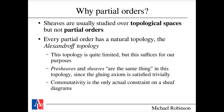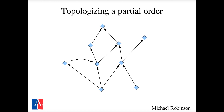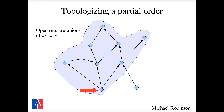What does the Alexandrov topology look like? Starting with a partial order: the elements are represented as blue diamonds and arrows go from smaller to larger elements. There are two maximal elements at the top and two minimal elements at the bottom. Some elements are comparable, some aren't. To build a topology you declare certain sets of elements as open sets.